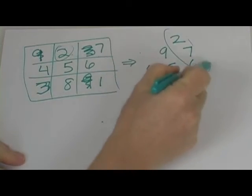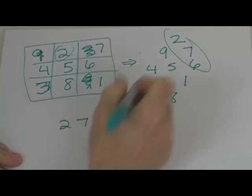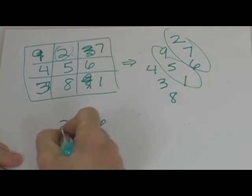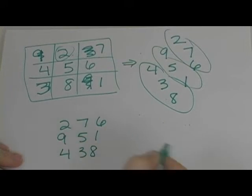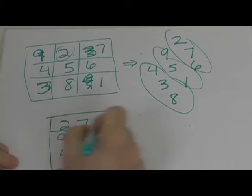And then you take this and you write 2, 7, 6 and then you write this one which is 9, 5, 1 and then you write the next one which is 4, 3, 8. And that is your magic square.